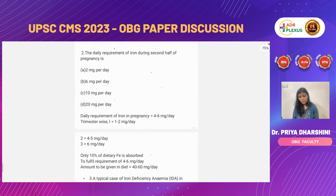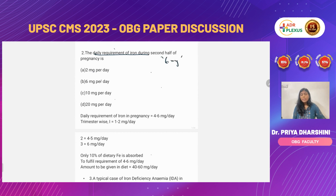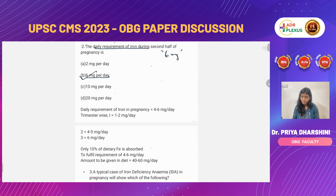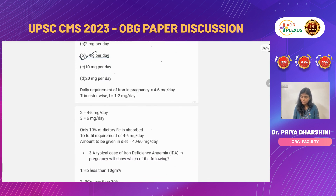Coming to the next question: the daily requirement of iron during pregnancy. Iron requirement is generally around 6 milligrams. Trimester-wise: the first trimester requires up to 2 milligrams, then it increases to 4 to 6. The better option here is B — 6 milligrams per day.